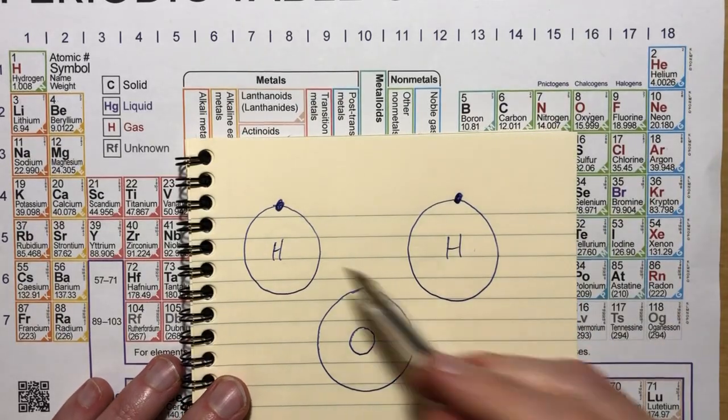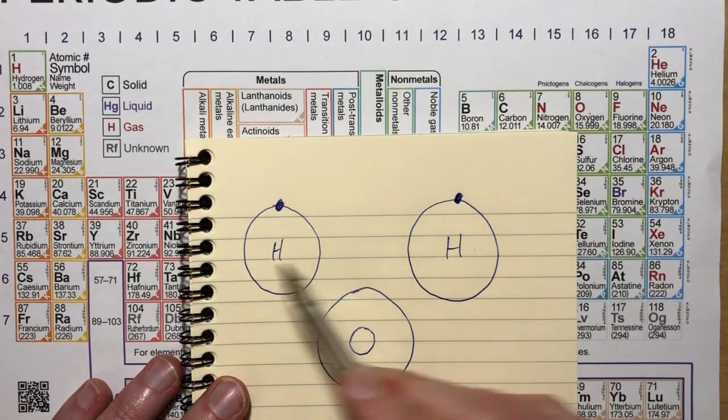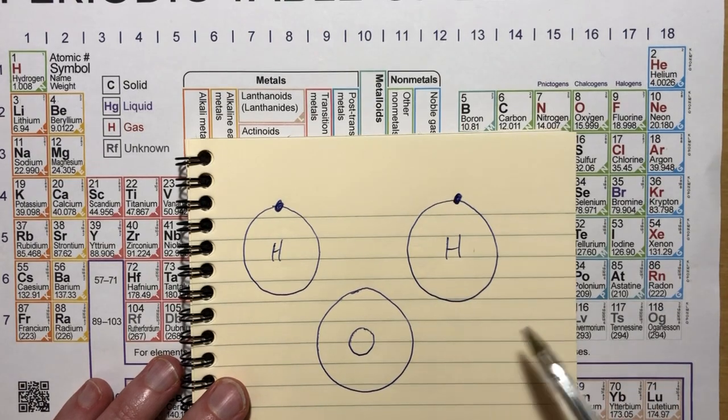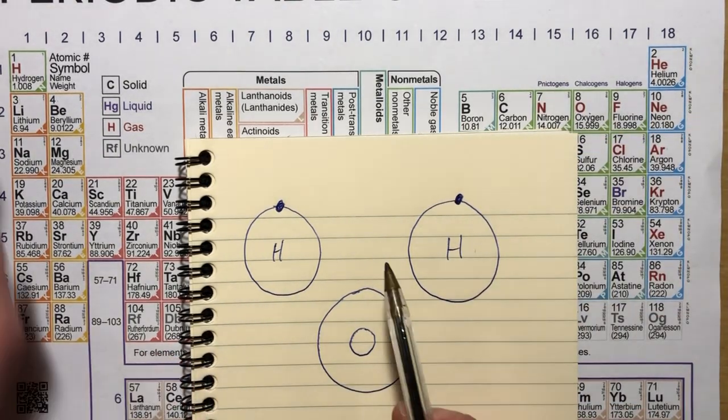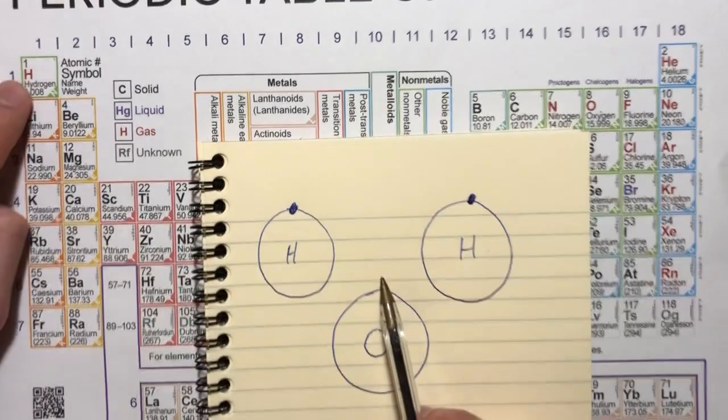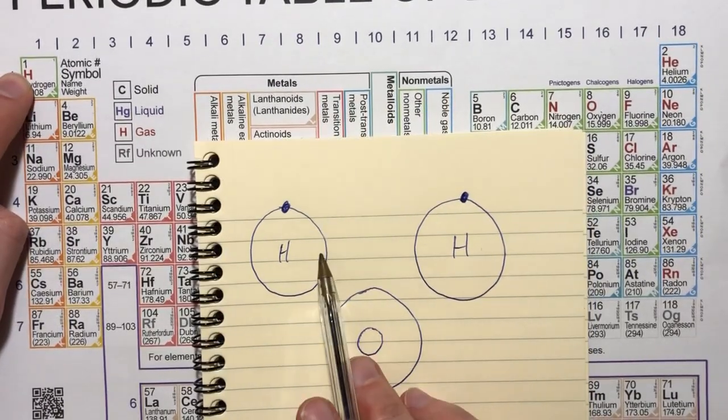Let's have a look at the covalent bonding that takes place when hydrogen and oxygen come together to make water, H2O. So I've drawn my two hydrogen atoms with their single electron in their only shell.